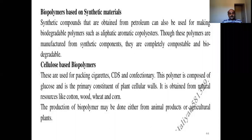The fourth type is cellulose-based biopolymers, used for packaging cigarettes and other items. This polymer is composed of glucose and is the primary constituent of plant cell walls. It is obtained from natural resources like cotton, wood, wheat, and corn. The production of biopolymers may be done either from animal products or agricultural plants.